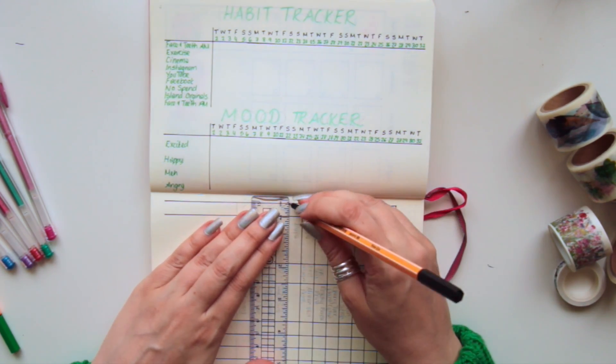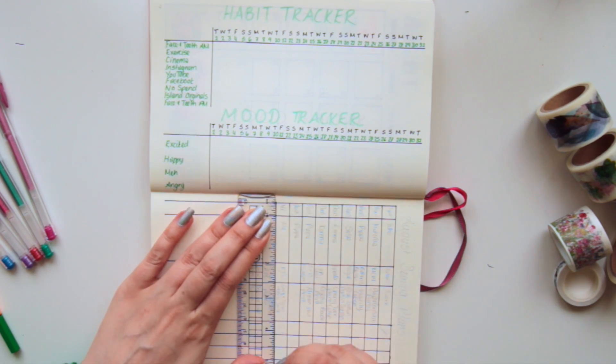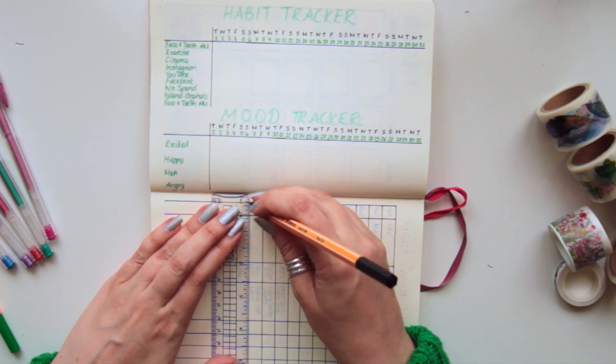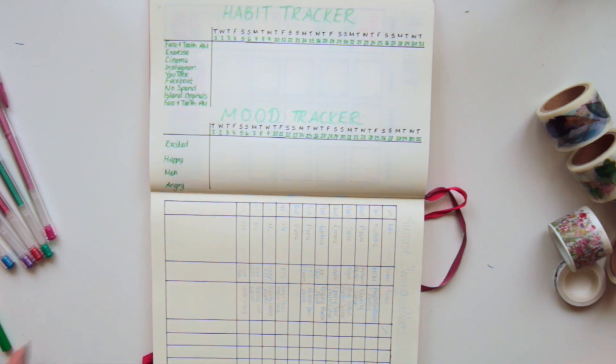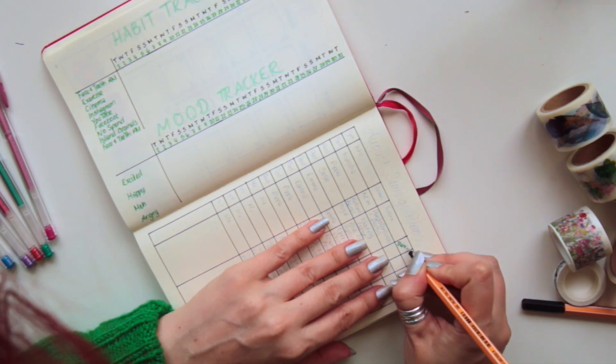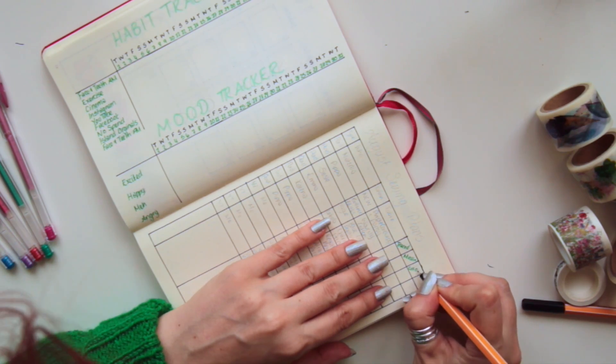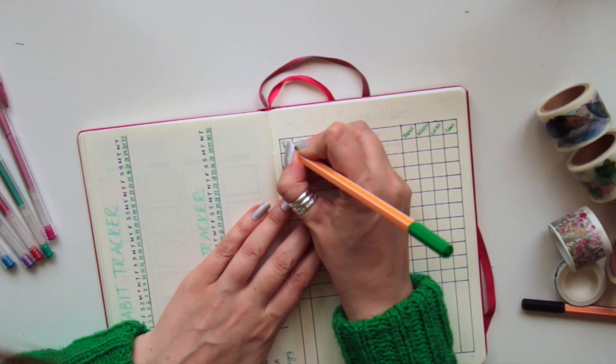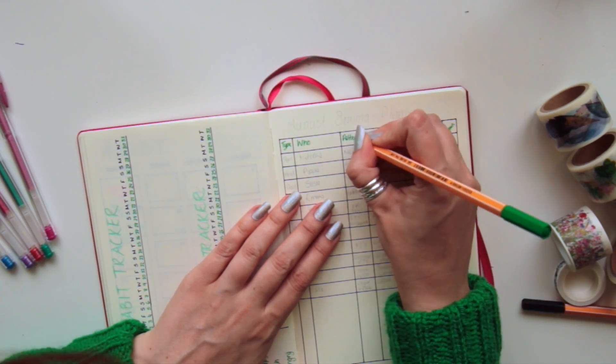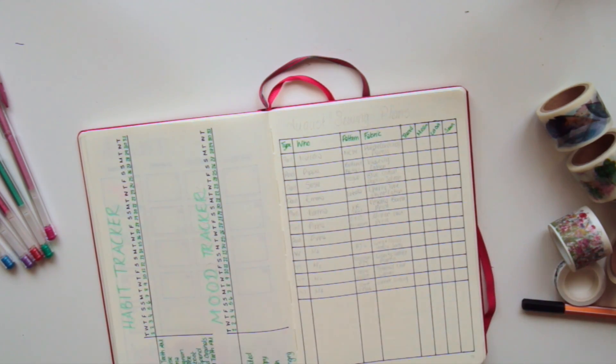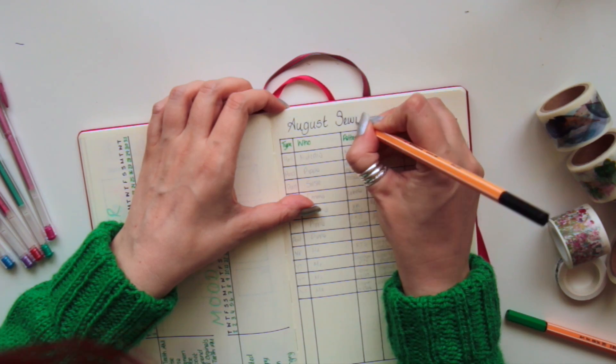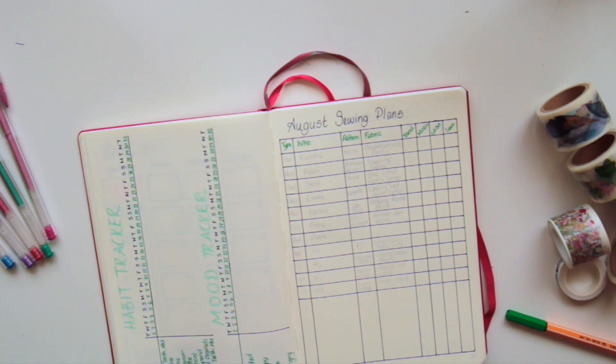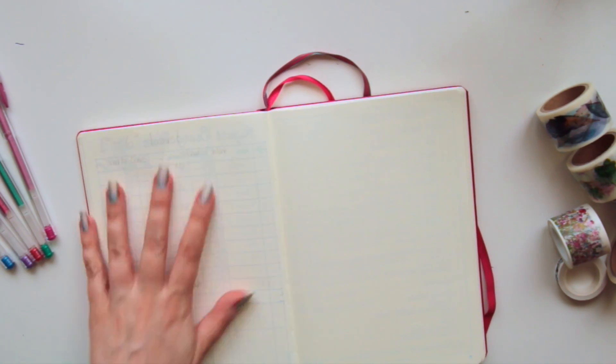I've skipped that one and I've gone straight into August sewing plans. I really liked how this layout worked for me last month. I liked having the traced, muslin, cut out, and sewn sections in there because as I was ticking those off, rather than just one final tick, I liked seeing the progression of that and it made me feel way more productive.